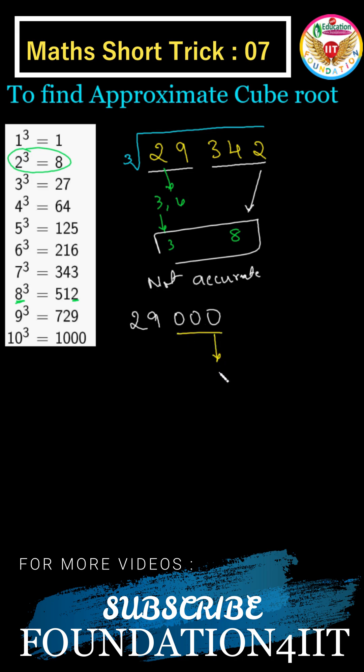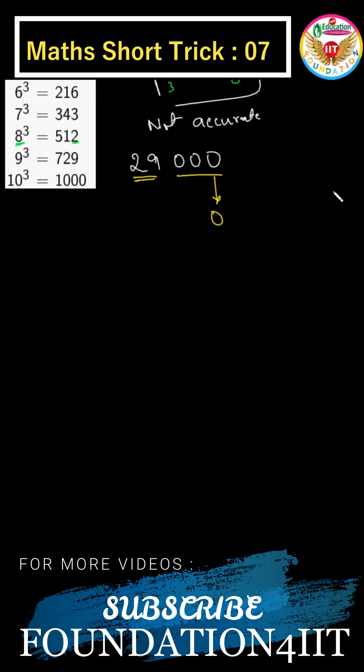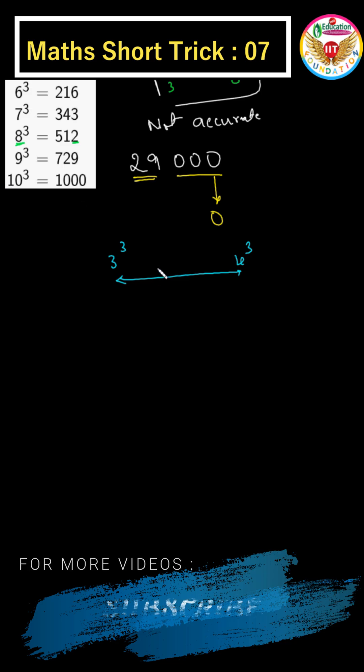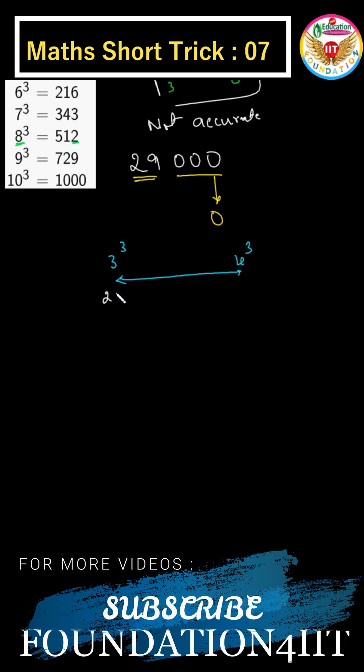Now in the place of last, you can keep the 0 and we have 29, just you can use one table. 29 means this is between 3 cubed and 4 cubed. We know that 3 cubed is 27, 4 cubed is 64, but 29 is very close to 27.